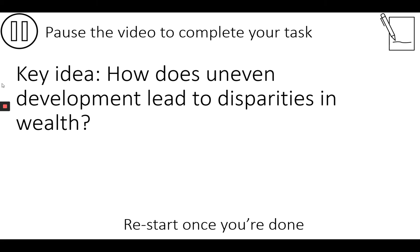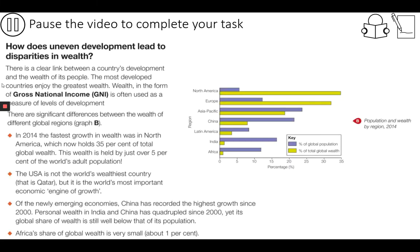Press pause whilst you add the second key idea: how does uneven development lead to disparities in wealth? In this slide we see an old friend come back — the Gross National Income, GNI. Look back in your notes if you need a refresher as to what this means. The bullet points offer some really useful ideas that might shock some of you. We've also got a horizontal bar chart on the right, so study this carefully paying special attention to the title, axes, and the key. Pause the video to make the necessary notes and when you're ready to tackle the next activity, press play.